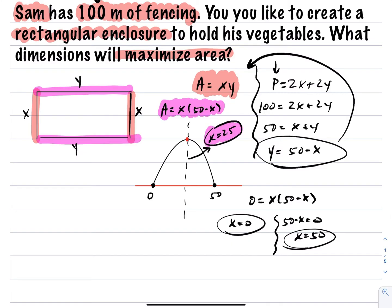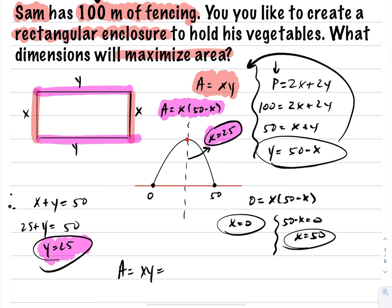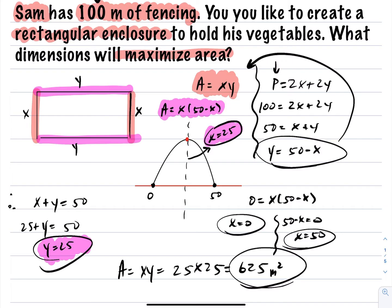To get maximum area, x must be 25. Since x plus y equals 50, substituting in gives 25 plus y equals 50, so y equals 25. It turns out this is actually not just any rectangle — to maximize area, it creates a square. The area is x times y, which is 25 times 25, equal to 625 square meters. So the answer is 625 square meters.